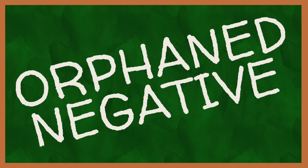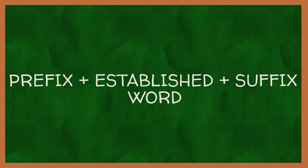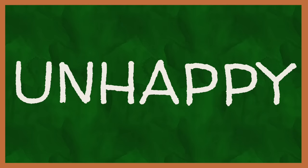So what exactly is an orphaned negative word? To understand them, we need to understand what a prefix and a suffix is. These are specific kinds of morphemes — with a morpheme being the smallest unit of language — that are added to the start or end of an already established word. Prefixes go at the start and suffixes go at the end, and they are used to change the meaning of a word, often to mean the opposite. Take the popular prefix 'un': when we add it to happy we get unhappy, meaning we are not happy.